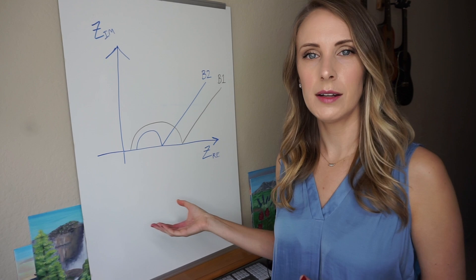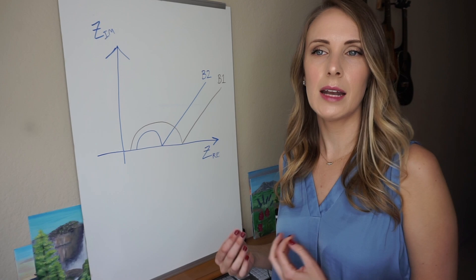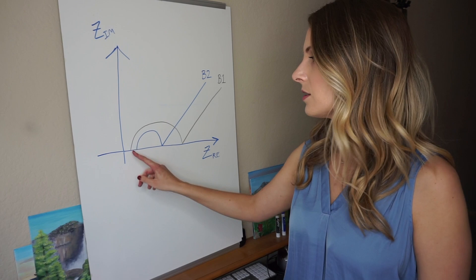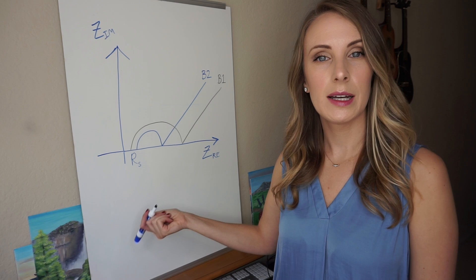Now you can't really understand everything from a Nyquist plot for studying the system and studying capacity fade of a battery, but it can give you some key areas to look at when you're doing your research. For instance, this first intersection is sometimes called the solution resistance.